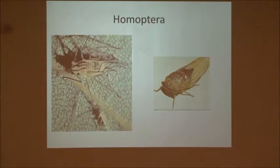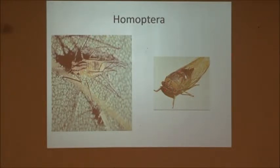Hemoptera — this has a really hard body and a long wing. Anybody know what this is? Cicada — yeah, those are kind of gross.